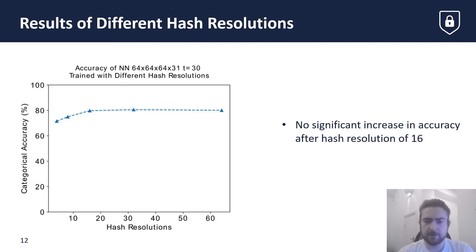When considering the effect of the hash resolution H on the categorical accuracy, we observe that accuracy increases as H increases up to around H equals 16, after which there is not much significant improvement. When identifying devices from a larger set of classes, it may be necessary to increase this value as the number of destinations increases.